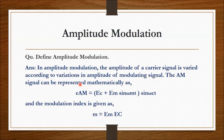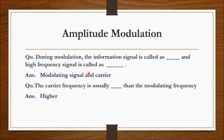The AM signal can be represented mathematically as: e_AM = (E_c + E_m · sin(ωm·t)) · sin(ωc·t), and the modulation index is given as m = E_m / E_c.